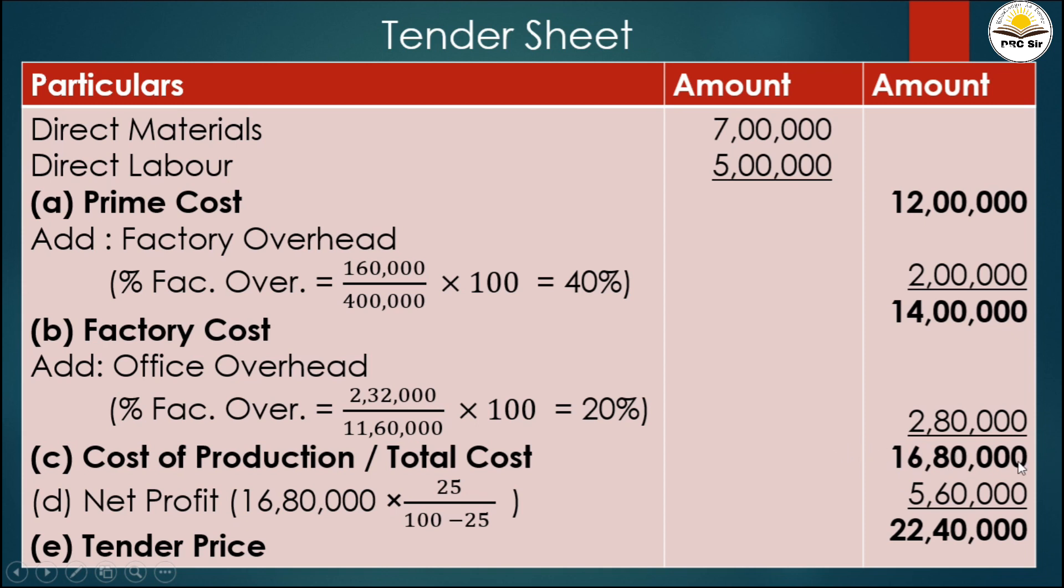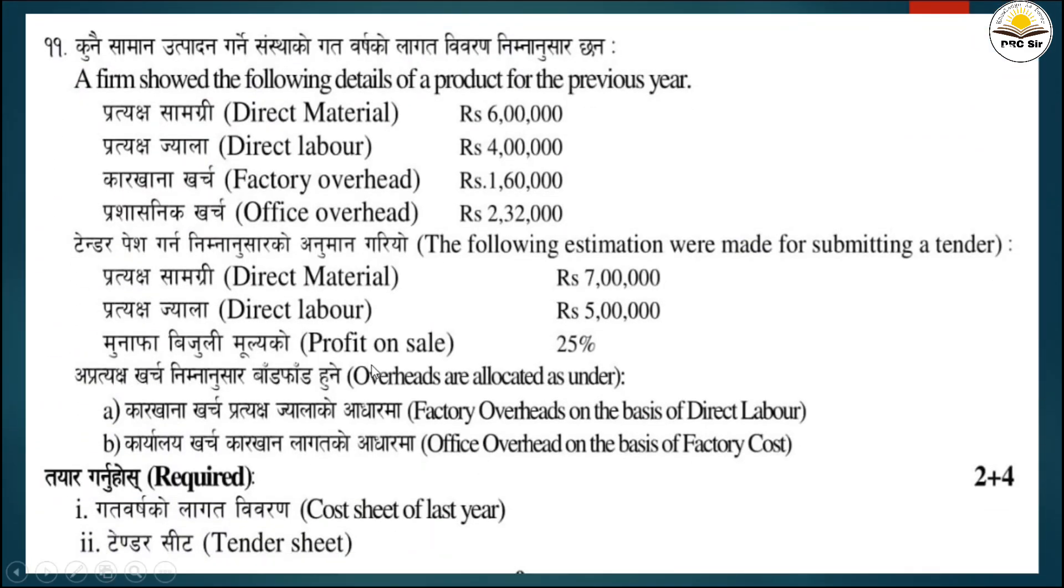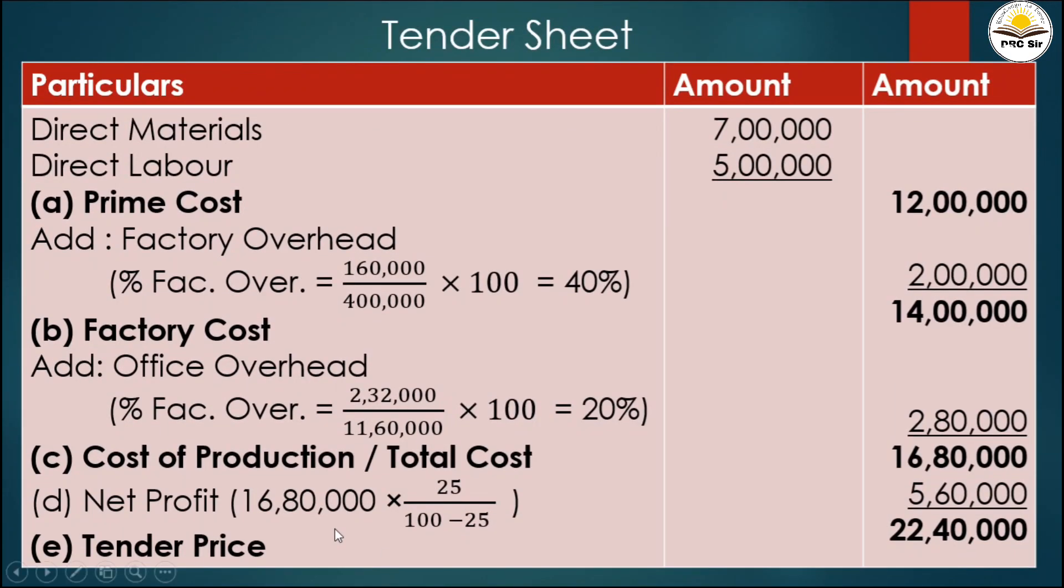Now we calculate profit. The question states profit on sale is 25 percent. The formula for net profit is: cost of production times percentage of profit divided by 100 minus percentage.